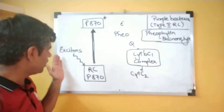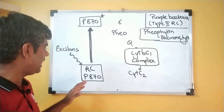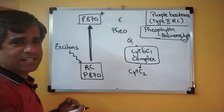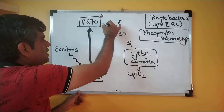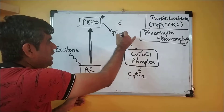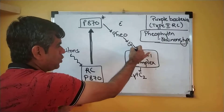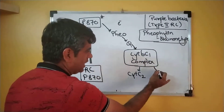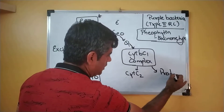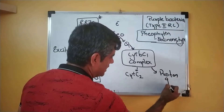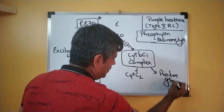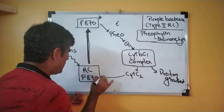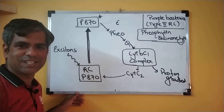The excitons excite the reaction center at 870 nanometers, which after excitation donates the electron first to pheophytin, then to quinone, via the cytochrome BC1 complex, which generates the proton gradient that can then be used for synthesis of ATP. Via cytochrome C2, the electrons return back to the reaction center.